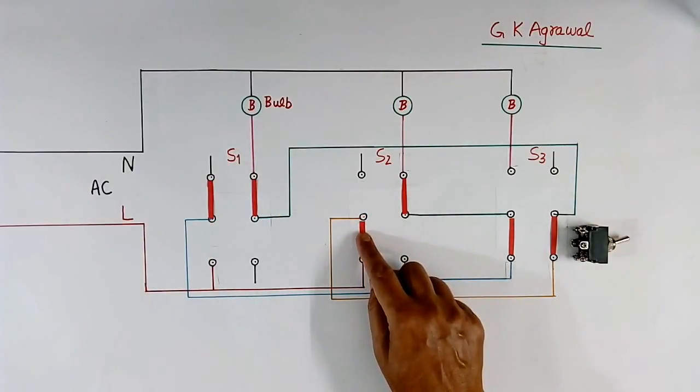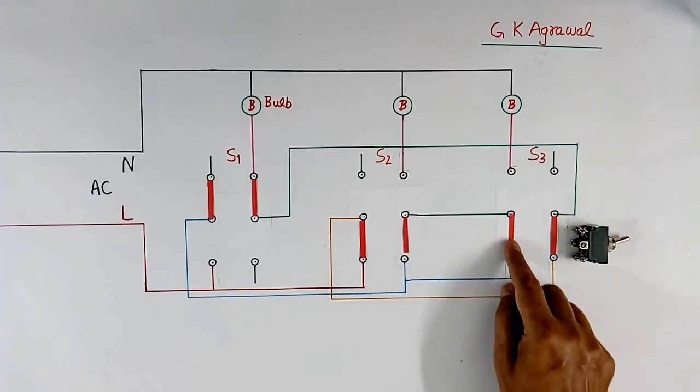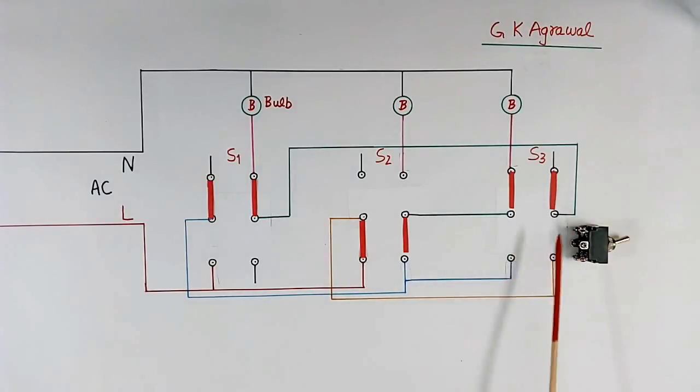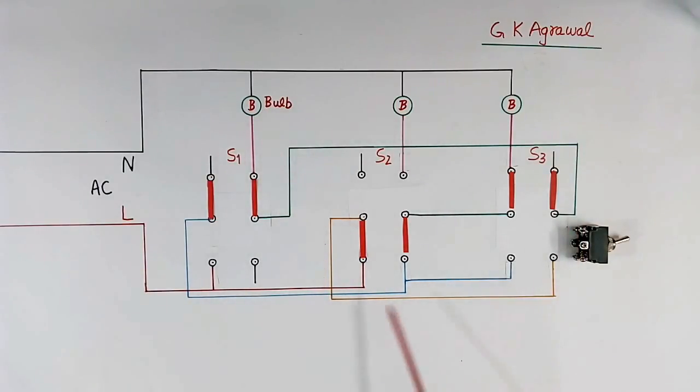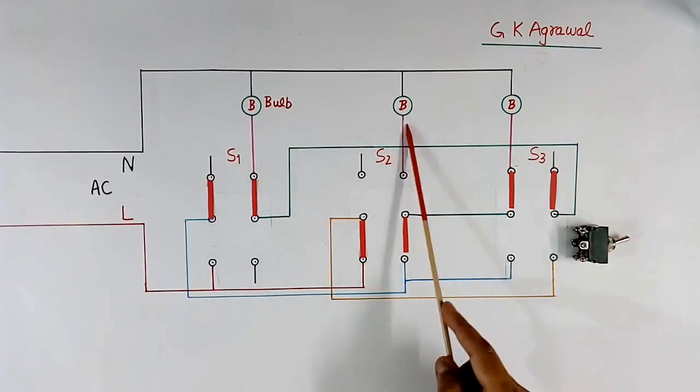Similarly, in place of this, if I switch ON this, then this connection will break. Again it will not get supply, so it will come OFF. Like that, all 3 will work.